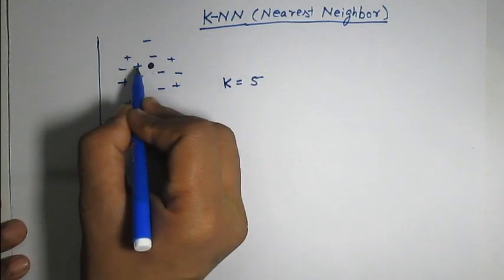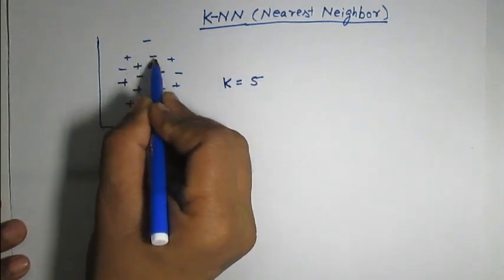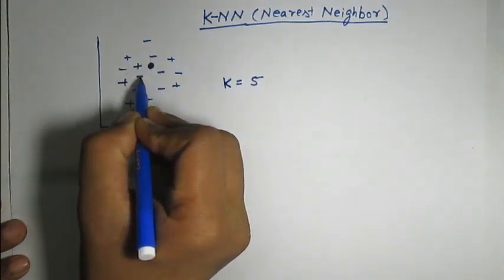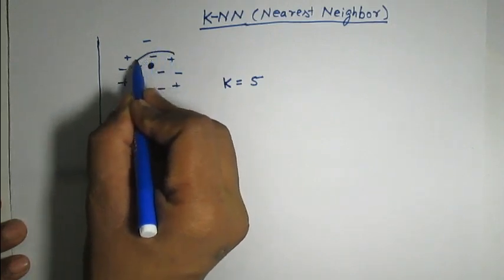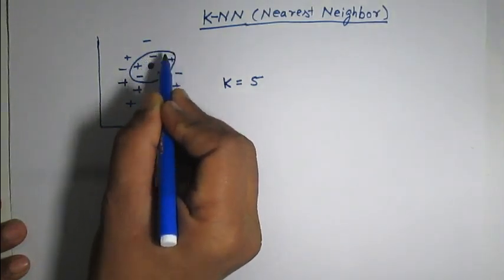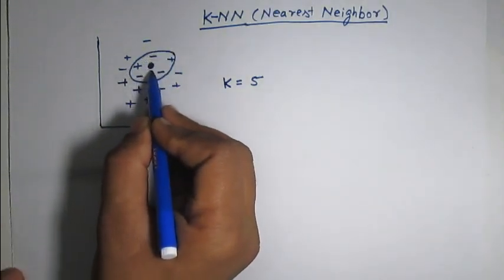5 neighbors of this are 1, 2, 3, 4 and 5. These are the 5 nearest neighbors to this unknown data.